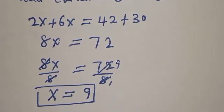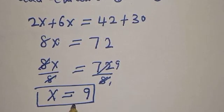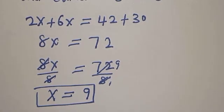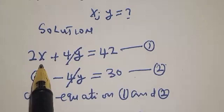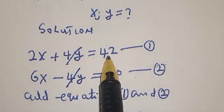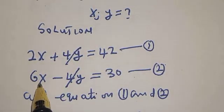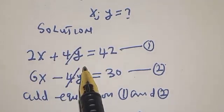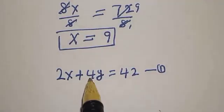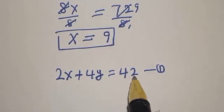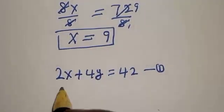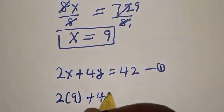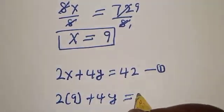Since we've gotten the value of x, let's substitute for x in any of the equations, either equation 1 or 2. Equation 1 is 2x plus 4y equals 42, and equation 2 is 6x minus 4y equals 30. But let's make use of equation 1. For equation 1, 2x plus 4y equals 42, where x equals 9. Then we have 2 times 9 plus 4y equals 42.